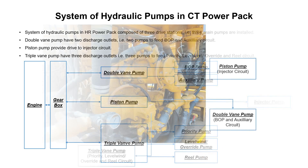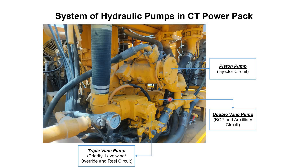As shown in the diagram, the pump at the bottom is the double vane pump to drive the BOP and auxiliary circuits, the middle one is the piston pump to drive the injector circuit, and the third is the triple vane pump to provide feed to the priority, level wind, override, and reel circuits. The level wind and override share one pump outlet. We will discuss all these pumps one by one in upcoming tutorials.